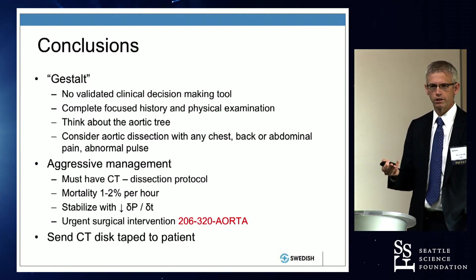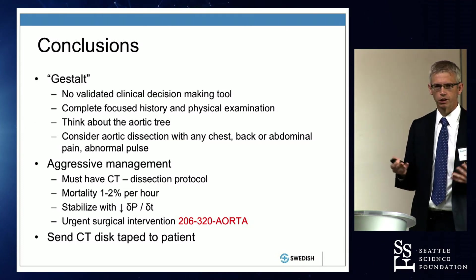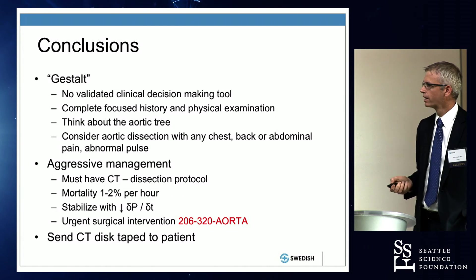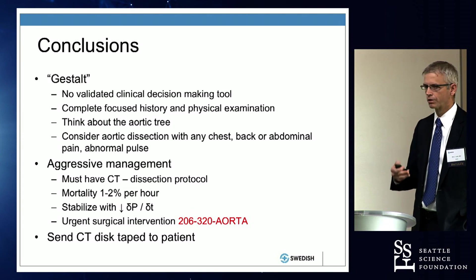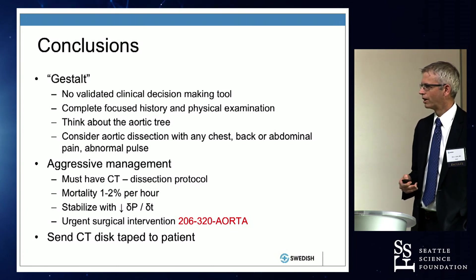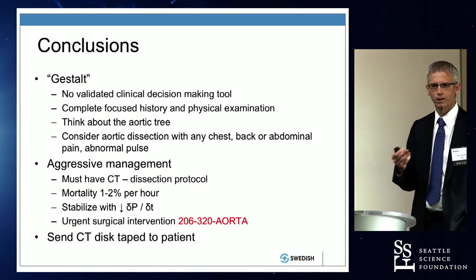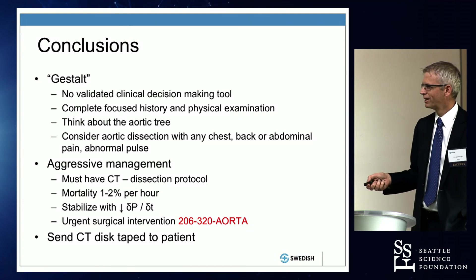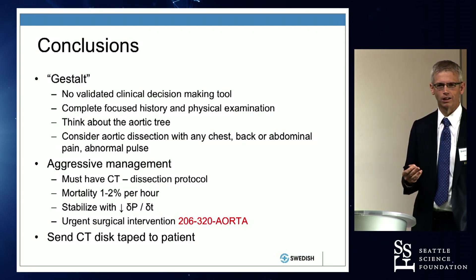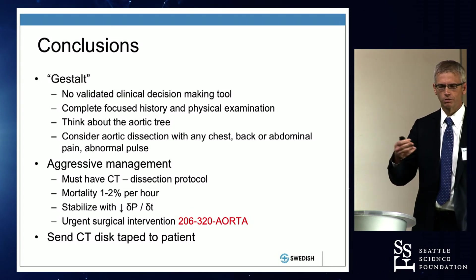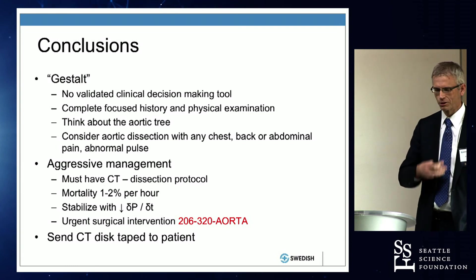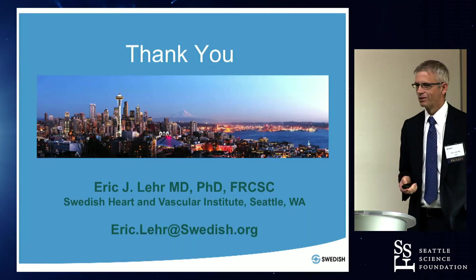In conclusion, it's really important that when a patient comes into the emergency department, you have this gestalt from experience — something's not quite right. You have to have the question in your head: is this a dissection? That will guide you to getting a CT scan. It's really important to think about the mortality in those first hours, make a rapid diagnosis, ensure good anti-impulse therapy, and then urgent surgical intervention. You can call us anytime at 206-320-8-Aorta. We'll pick up. Please send the images — literally tape the CD to the patient's chest, because we can't help if we don't know what's going on.